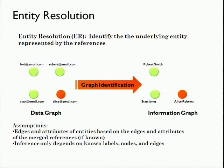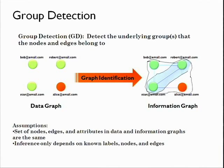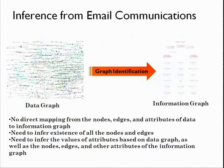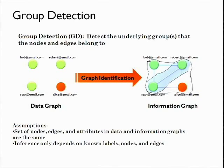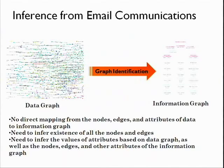Another aspect is that in the data graph, in many cases you'll have multiple representations for an entity. So you have to do a step of entity resolution, which is actually merging the nodes. And then the last one I'll mention is group detection or community detection — finding clusters of nodes in graphs. So these are the basic inference problems: collective classification, link prediction, entity resolution, and group detection.